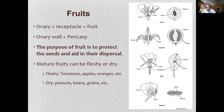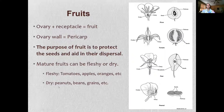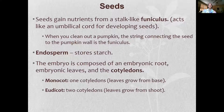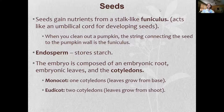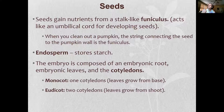Mature fruits can be fleshy or dry. Fleshy fruits — think tomatoes, apples, oranges, all that good juicy stuff. Dry fruits — think peanuts, beans, grains, acorns.